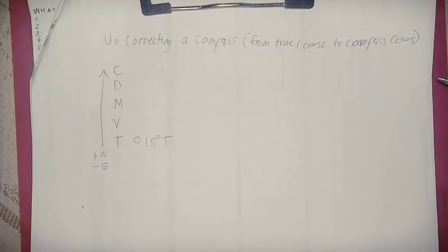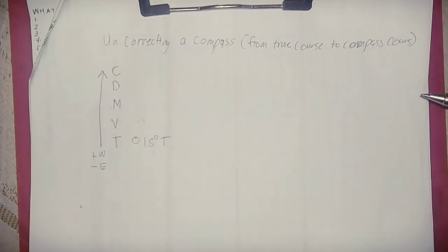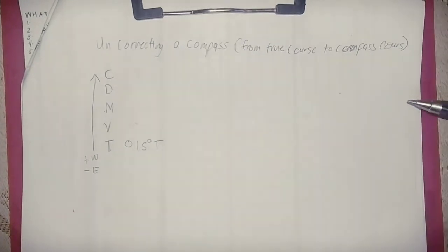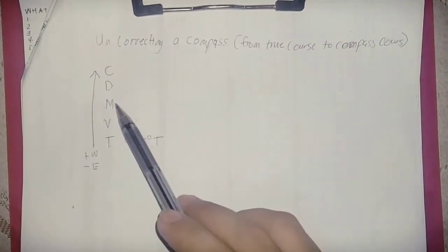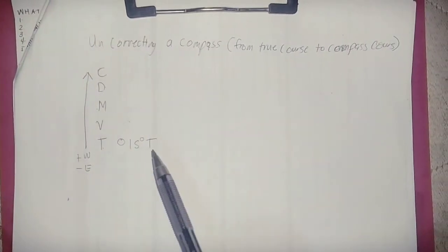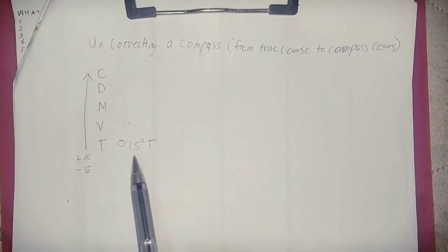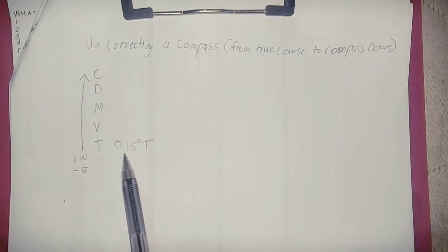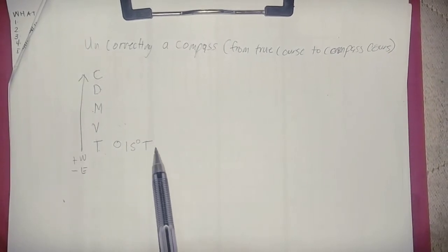Now to solve uncorrecting a compass — that is, going from true course to compass course — we also use CDMVT. Our given true course value is 015 degrees true.